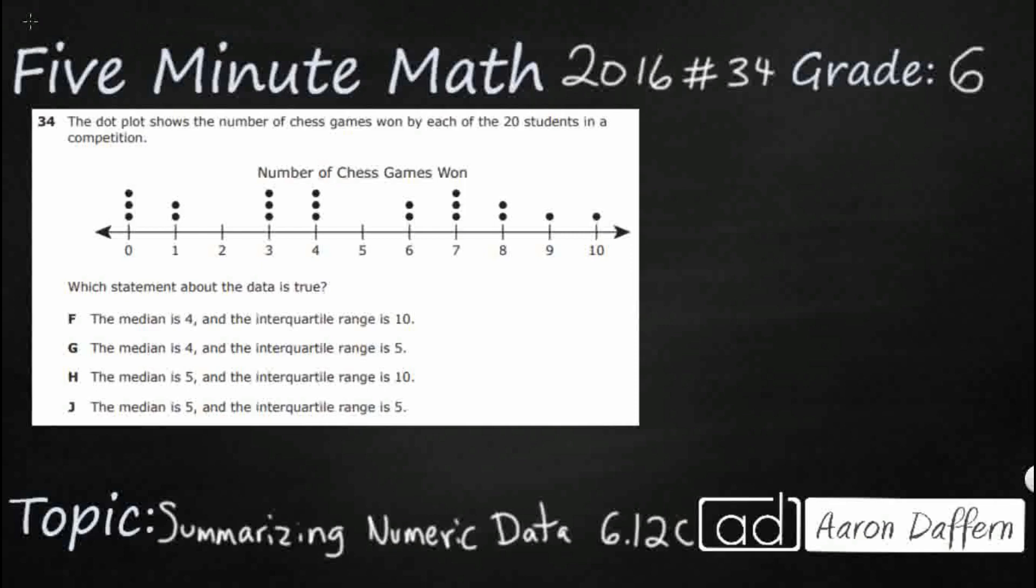We'll look at our answers together. We have a dot plot with 20 students represented. Take a look at how we have to describe this data - we need to use the term median and interquartile range, sometimes called the IQR.